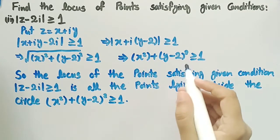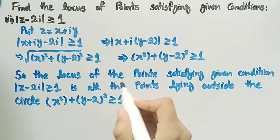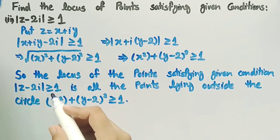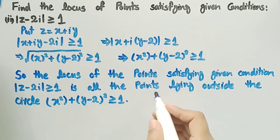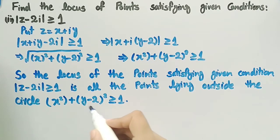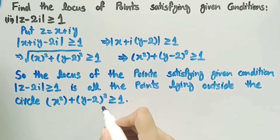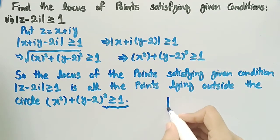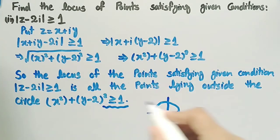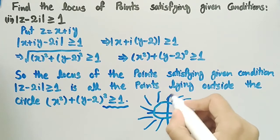Since there is a greater than or equal to 1 condition, the locus of points satisfying the given condition mod of z minus 2 iota greater than or equal to 1 is all the points lying outside the circle x squared plus y minus 2 whole squared equal to 1. Since the locus satisfies greater than or equal to 1, all points will be on the boundary of the circle and outside the circle.